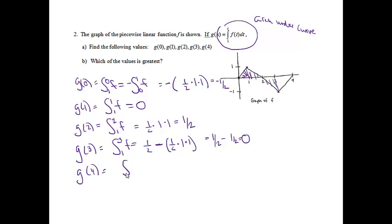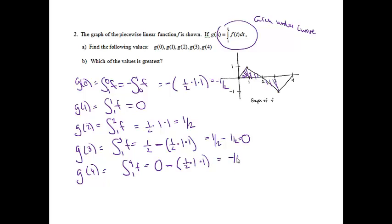g of 4 is the area under the curve from 1 to 4. I've already found 1 to 3, and that was 0. Now I just need to find from 3 to 4 — it's underneath the x-axis, so it'll be negative. It's a triangle with base 1 and height 1, so the area is 1/2, and we end up getting negative 1/2.